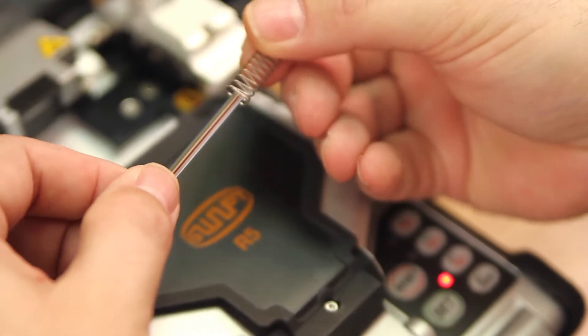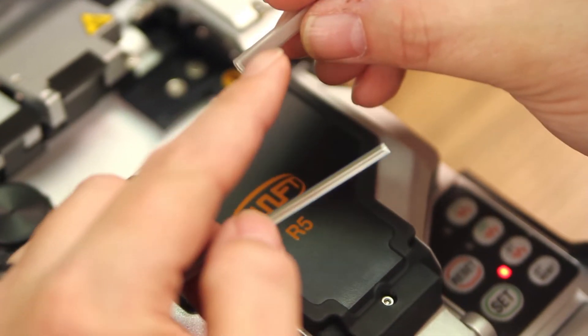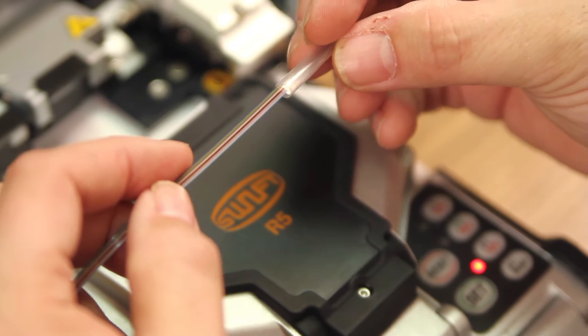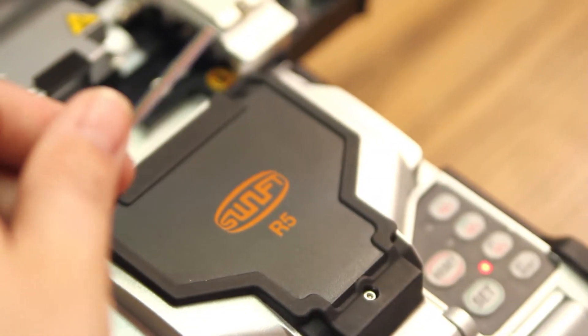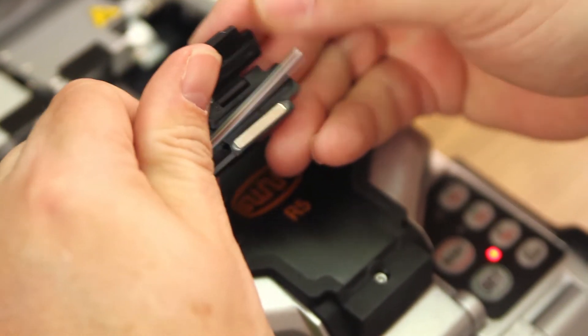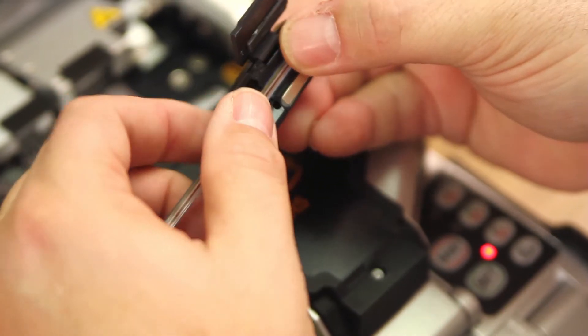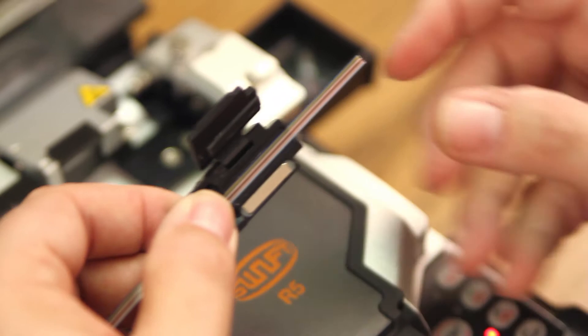Next, spring. Then, your heat shrink, making sure that your metal strength member is on the bottom. Then, load into your holder. Leaving approximately one inch tail.